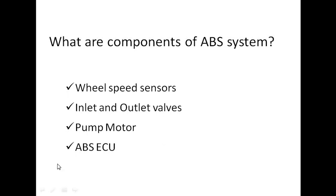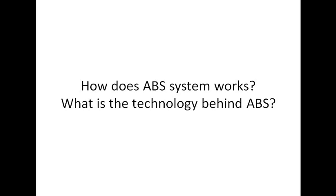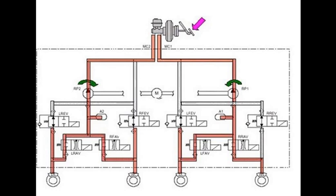Now, how to reduce the skidding and help the driver to steer? With the help of inlet and outlet valves, the brake pressure the driver has applied is released. This is the brake circuit — the brake circuit of the ABS system. For ABS to work, these eight valves must be present. Four of them are called inlet valves and four are called outlet valves. For every wheel, there are two valves: one inlet and one outlet.